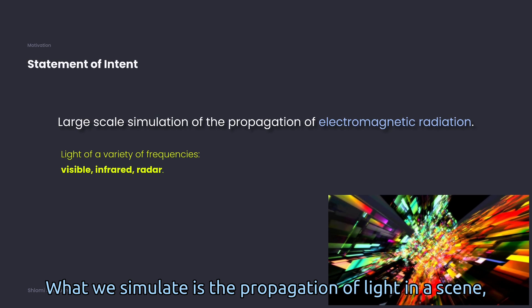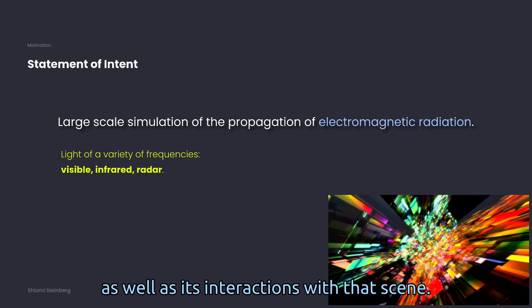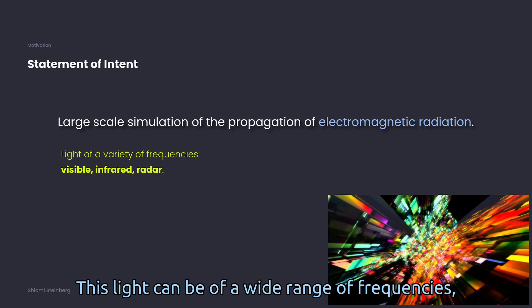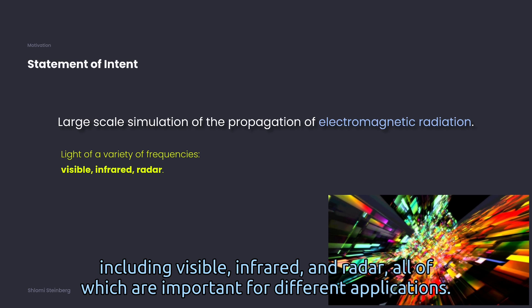What we simulate is the propagation of light in a scene, as well as its interaction with that scene. This light can be of a wide range of frequencies, including visible, infrared, and radar, all of which are important for different applications.